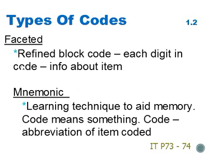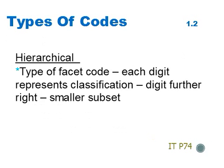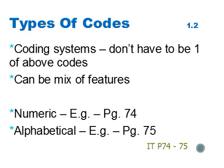Faceted is a refined block code because each digit in the code gives information about the item. Mnemonic is a learning technique to aid memory — a mnemonic code means something, and the code could be the abbreviation of the item coded. Hierarchical is a type of faceted code where each digit represents a classification, and each digit further to the right represents a smaller subset. A coding system doesn't have to be only one of the above codes; it could be a mix of features according to the items being coded.